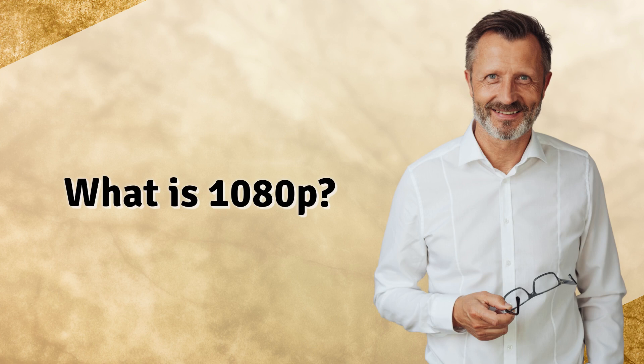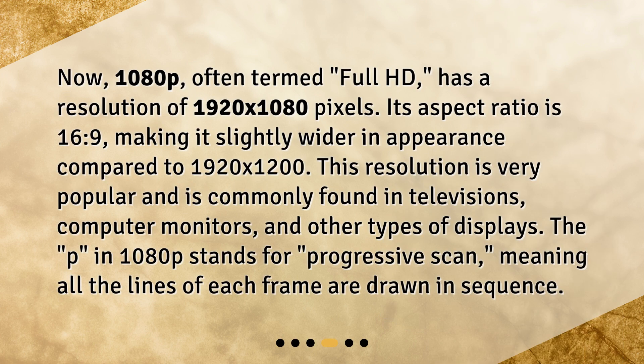What is 1080p? 1080p, often termed Full HD, has a resolution of 1920 by 1080 pixels. Its aspect ratio is 16:9, making it slightly wider in appearance compared to 1920 by 1200. This resolution is very popular and is commonly found in televisions, computer monitors, and other types of displays. The 'p' in 1080p stands for progressive scan, meaning all the lines of each frame are drawn in sequence.